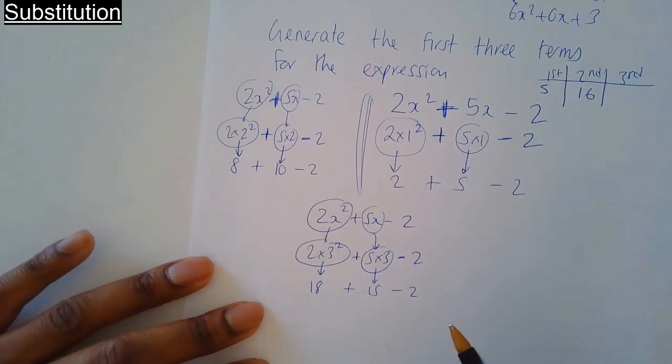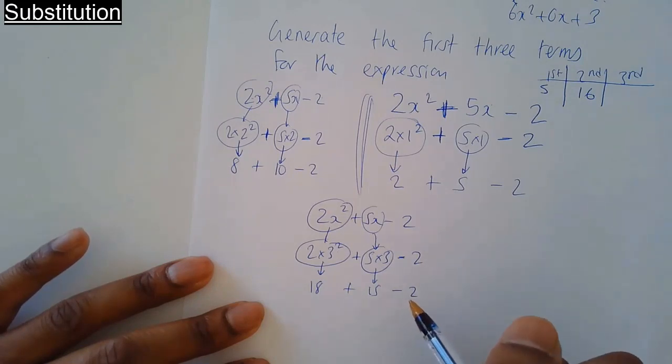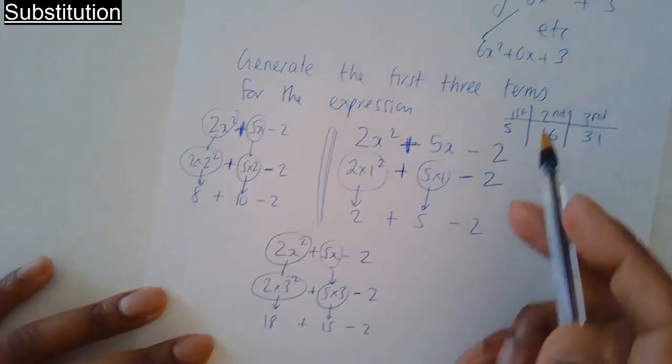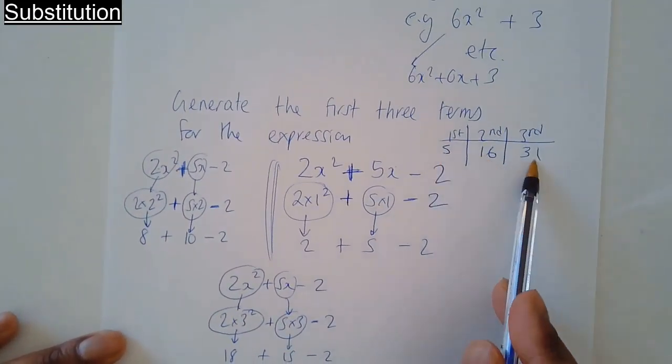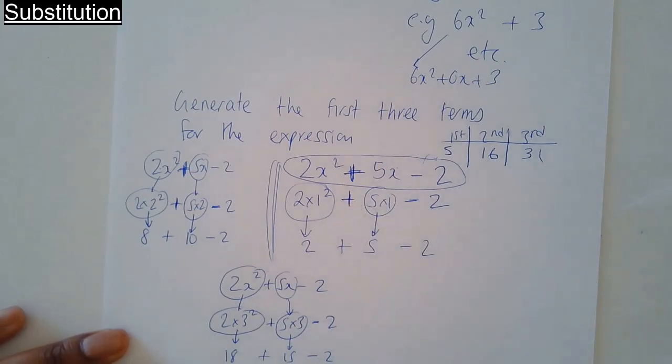18 plus 15 is 33. 33 take away 2 is 31. So here we have it: first, second, third term belonging to this quadratic expression.